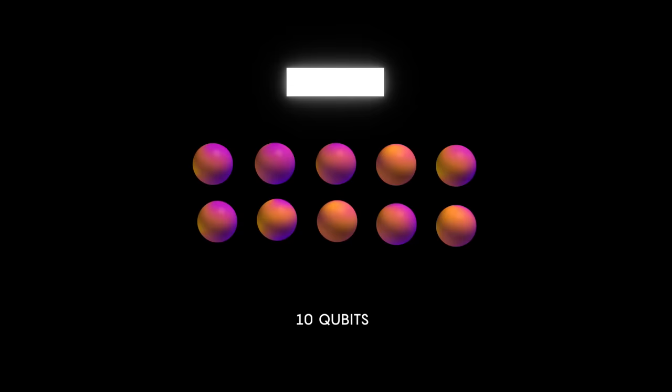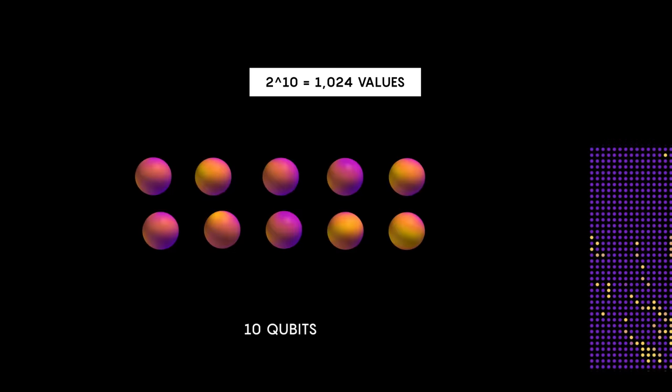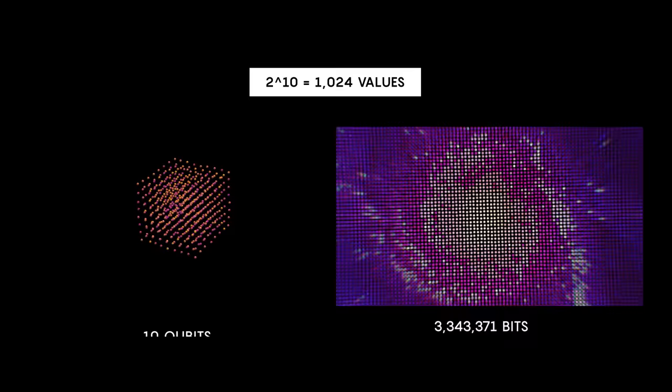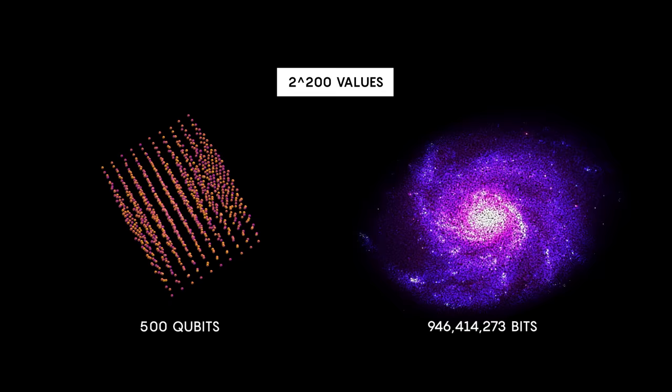To describe this entangled configuration with a classical computer, you'd need 2 kilobytes, or 16,000 bits. Expand to a system with 500 entangled qubits, and you now require more classical bits than there are atoms in the known universe. This is exactly what Feynman meant when he said that classical computers weren't scalable for simulating quantum mechanics.